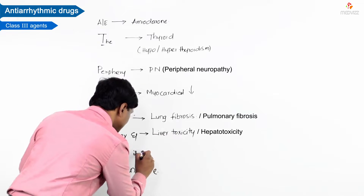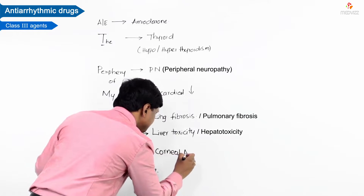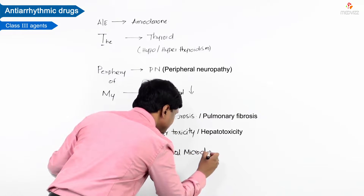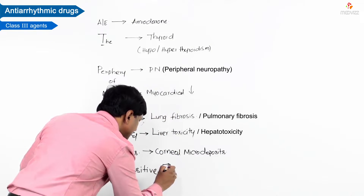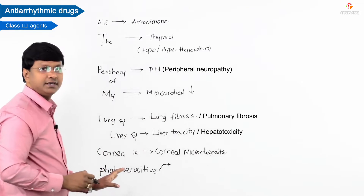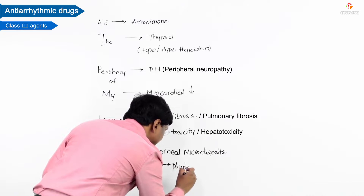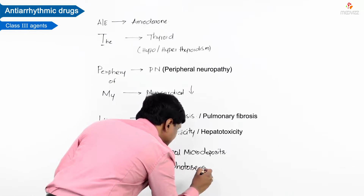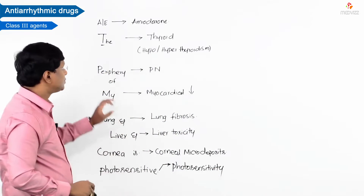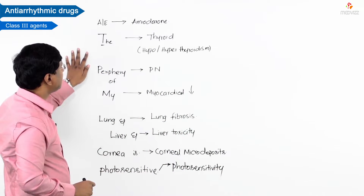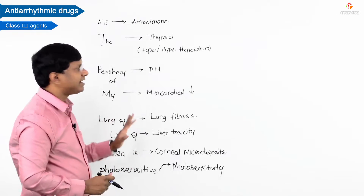C stands for corneal micro-deposits. P stands for photosensitivity — amiodarone has the adverse effect of photosensitivity. So these are the adverse effects associated with amiodarone.